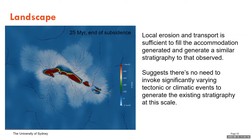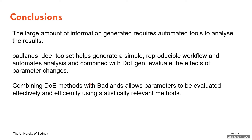To wrap up: the large amount of information generated by running multiple models really requires automated tools to analyse results. The Badlands DOE toolset helps generate a simple, reproducible workflow and automates analysis combined with Doogen to evaluate the effects of parameter changes. Evaluating parameters effectively and efficiently using statistically relevant methods is key to building really good Badlands models. Thanks to everyone for coming today.